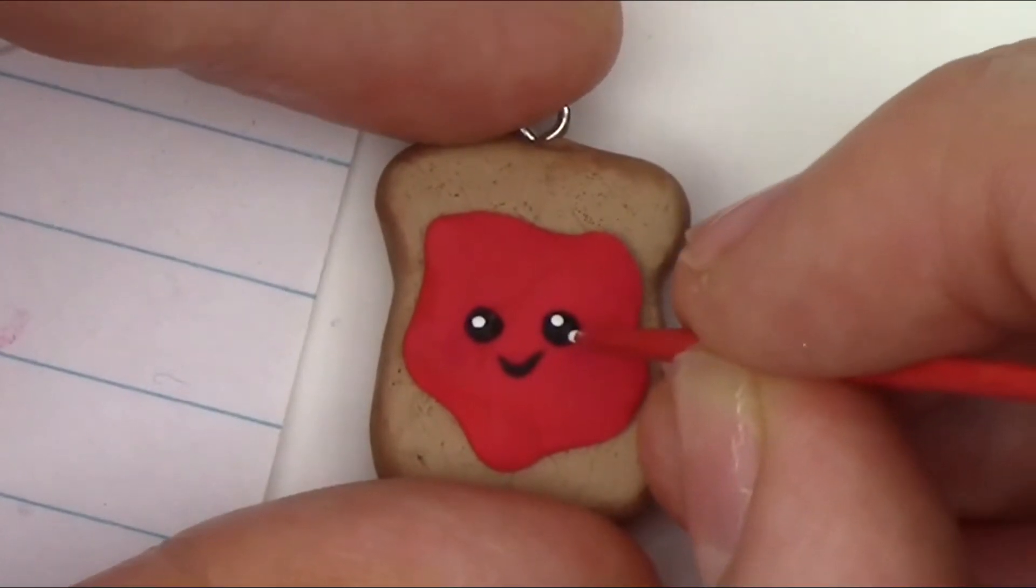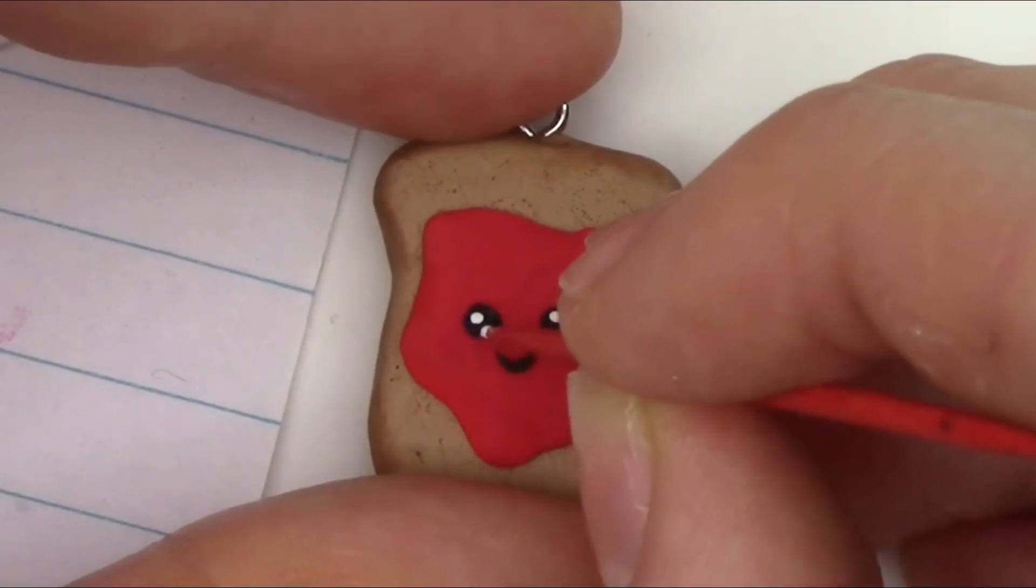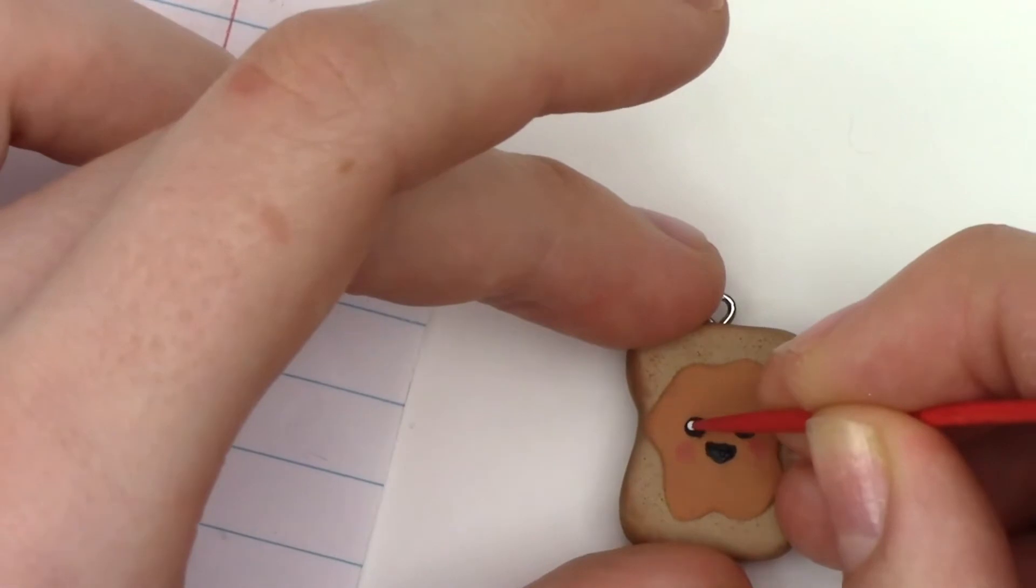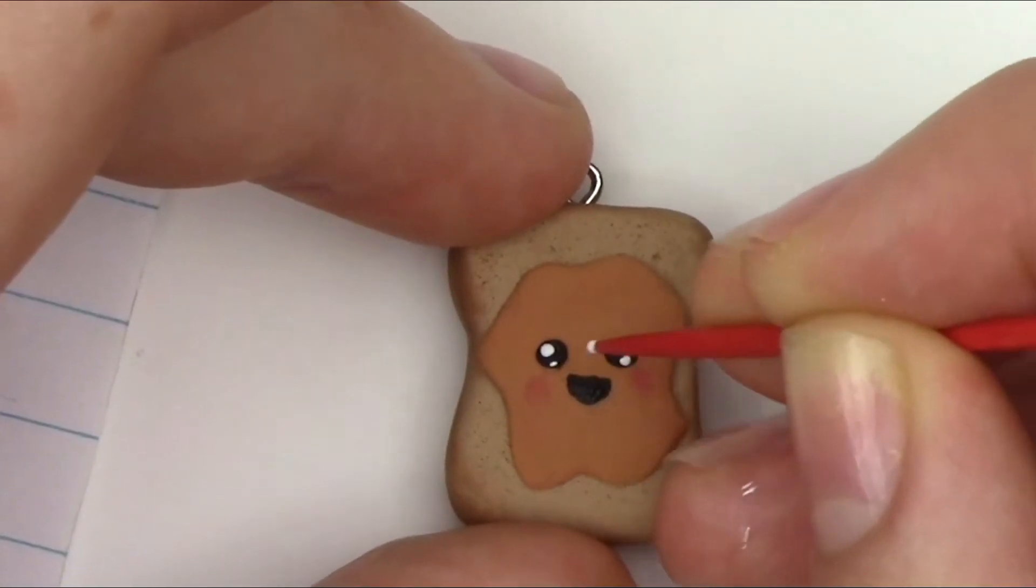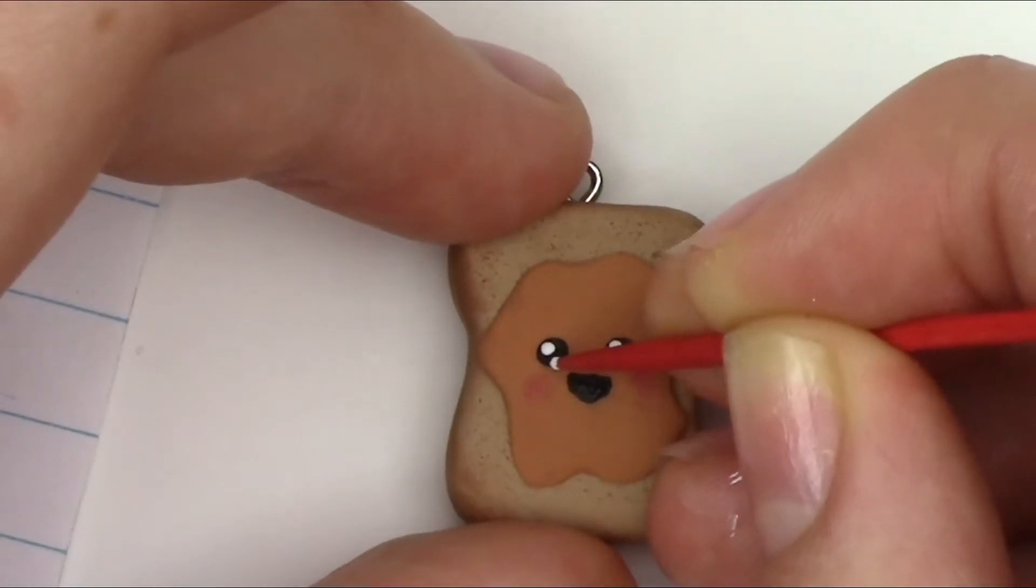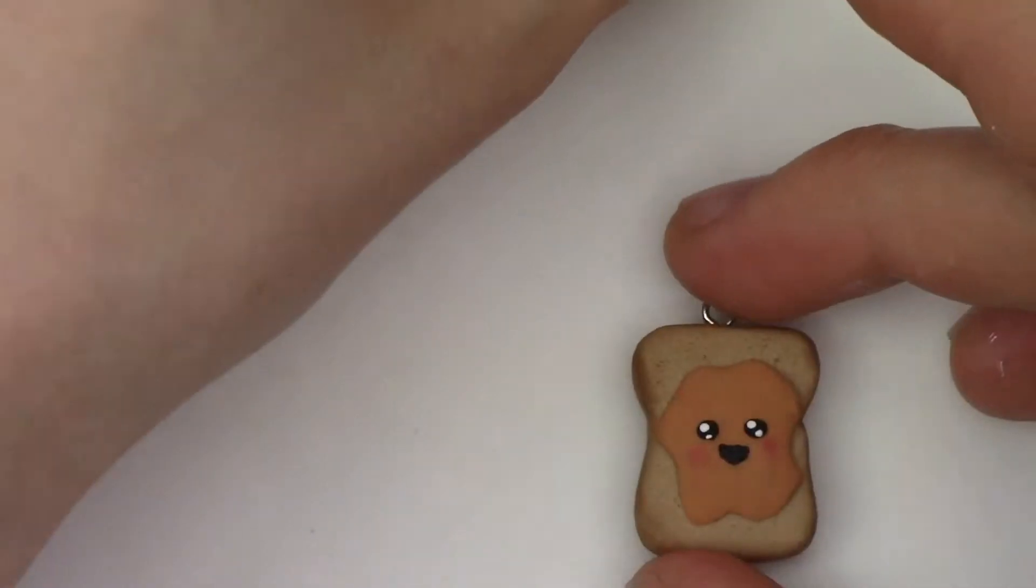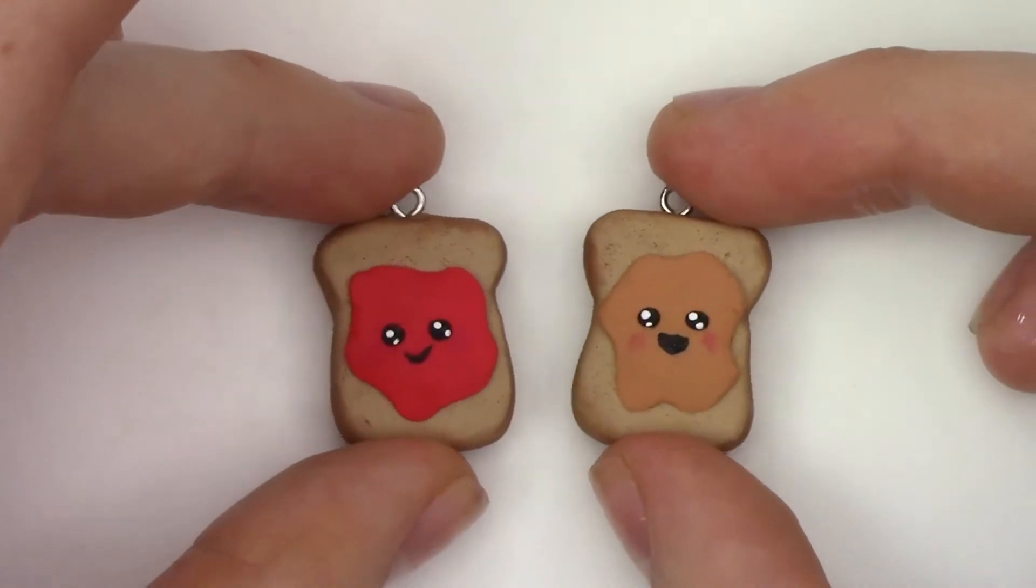The glaze that I used for my charms, I actually used clear nail polish. And I looked it up after I was done making this video and it said that clear nail polish on clay charms will actually eat away at your charms and make them smushy. So I did not know that.